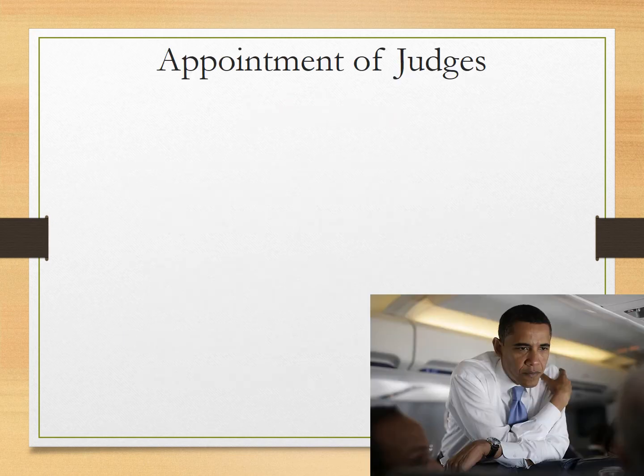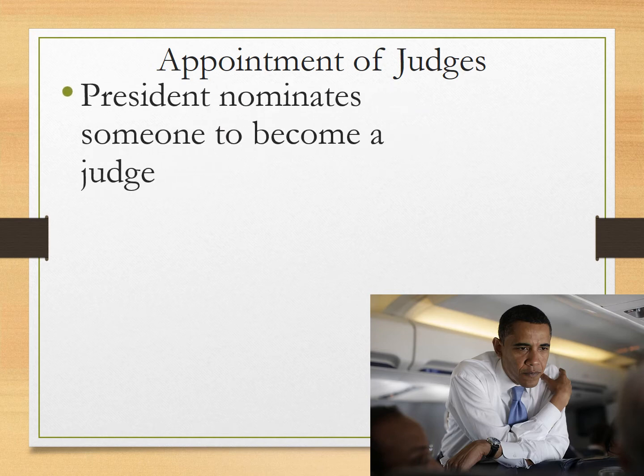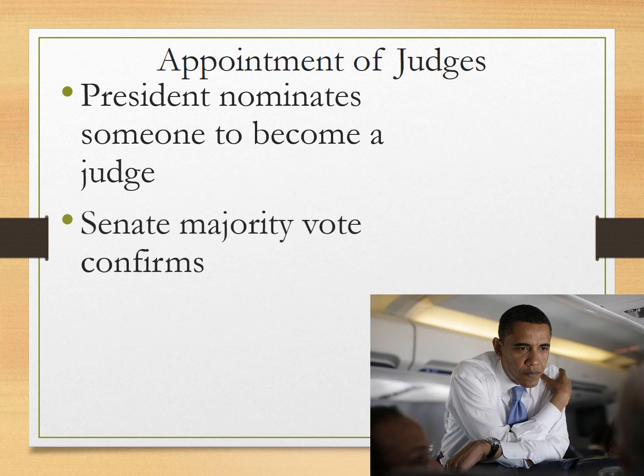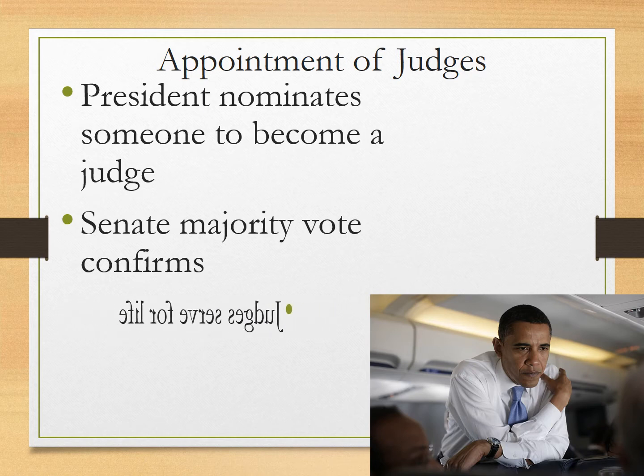Who gets to pick judges? For the federal government, the president gets to nominate someone to become a federal judge. Almost always these are former lawyers who they are picking — they're knowledgeable. Sometimes they're former constitutional law professors, like Obama was himself. Once the president has picked a judge, the Senate majority is supposed to vote to confirm that judge, and then the judges serve for life.